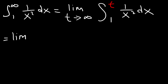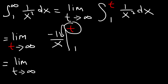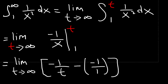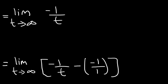We have the limit as t goes to infinity of negative 1 over x evaluated from 1 to t. First we replace x with t to get negative 1 over t, then minus replacing x with 1, which gives minus negative 1 over 1. Simplifying: negative 1 over t, and then negative times negative 1 simply becomes positive 1.